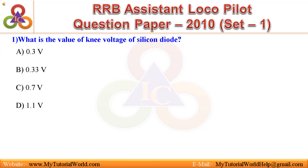Question 1: What is the value of knee voltage of a silicon diode? A. 0.3 V, B. 0.33 V, C. 0.7 V, D. 1.1 V. Answer is 0.7 V.